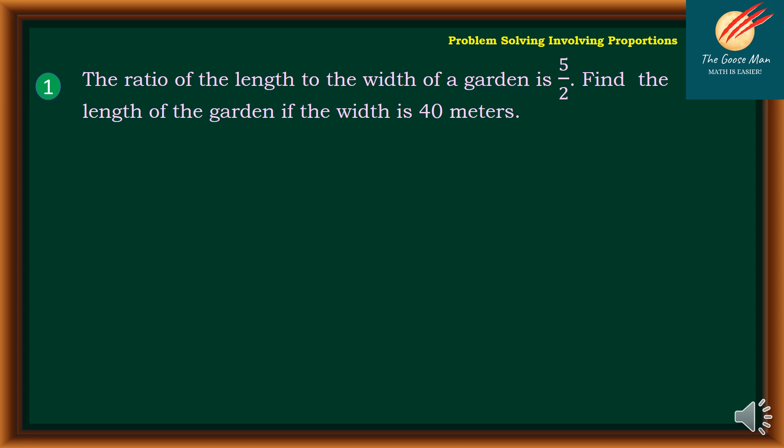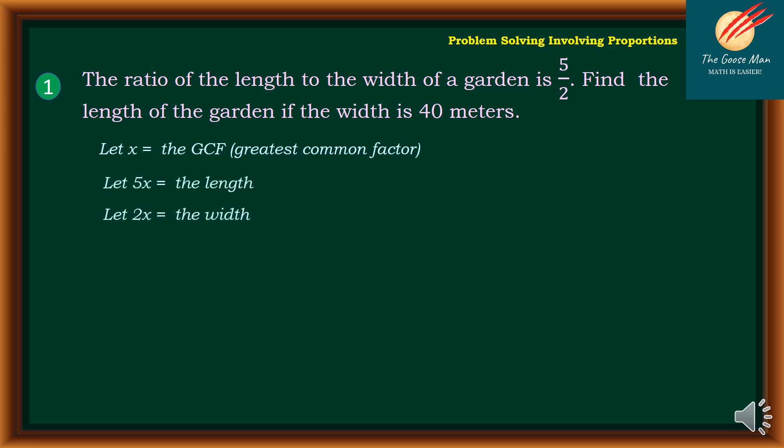Let's consider problem number 1. The ratio of the length to the width of a garden is 5 over 2, or 5 is to 2. Find the length of the garden if the width is 40 meters. First, we will let x as the greatest common factor. Then we have 5x as the length while 2x is equal to the width.